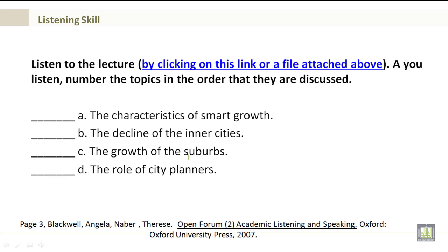As you listen, number the topics in the order that they are discussed. Here are the topics: A. The Characteristics of Smart Growth. B. The Decline of the Inner Cities. C. The Growth of the Suburbs. And D. The Role of City Planners.